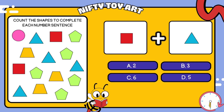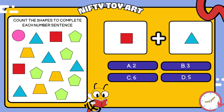I have a square plus triangle. How many all together? That's right, six.